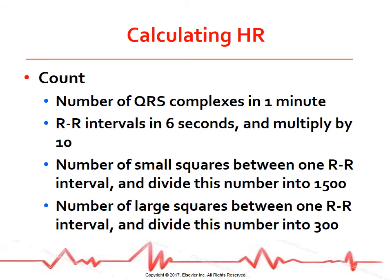You can use a variety of methods to calculate heart rate from an ECG. The most accurate way is to count the number of QRS complexes in 1 minute. However, because this method is time-consuming, a simpler process is used. Note that every 3 seconds a marker appears on the ECG paper. Count the number of R-to-R intervals in 6 seconds and multiply by 10 to get an estimated number of beats per minute. Another method is to count the number of small squares between one R-to-R interval and divide into 1500. You can also count the number of large squares between one R-to-R interval and divide into 300 to get the heart rate. All these methods are most accurate when the rhythm is regular.